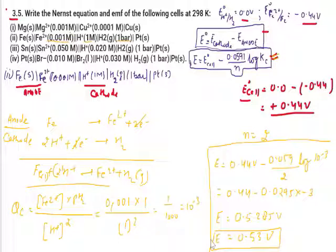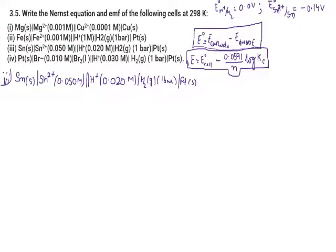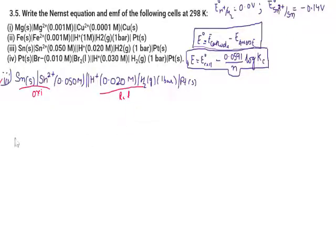Now solving part 3 of question 3.5. On the left (anode), tin (Sn) is oxidized. The H⁺ concentration is 10⁻³ on the anode side, and hydrogen gas at 10⁻³ on the cathode side. The oxidation occurs on the left-hand side (anode).